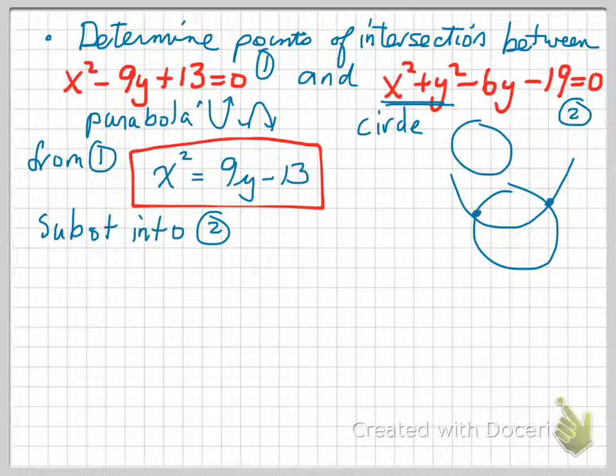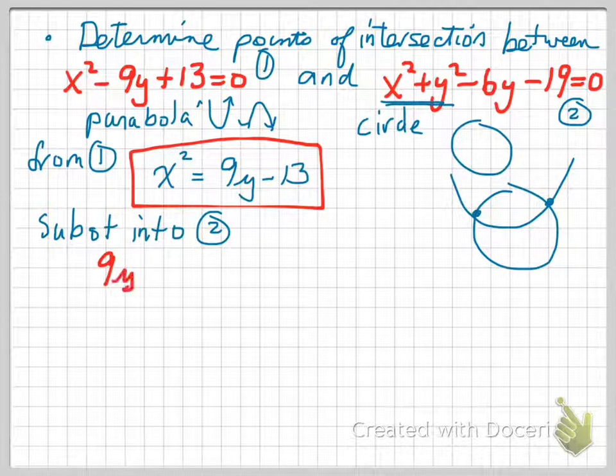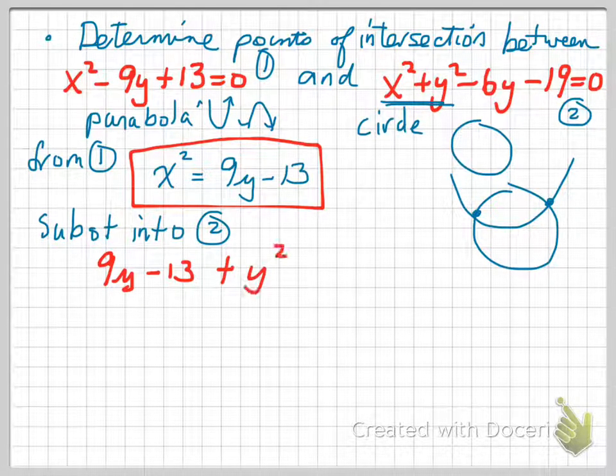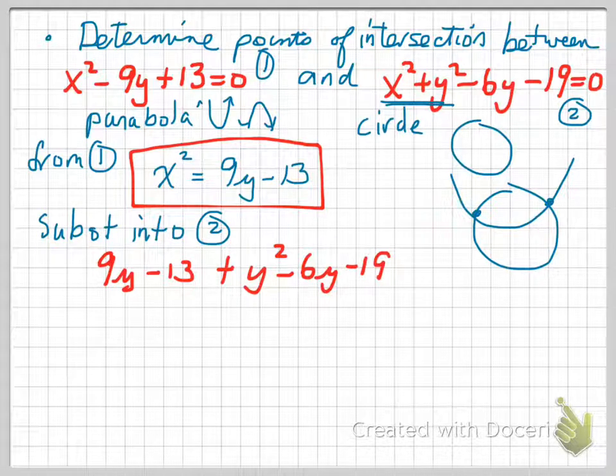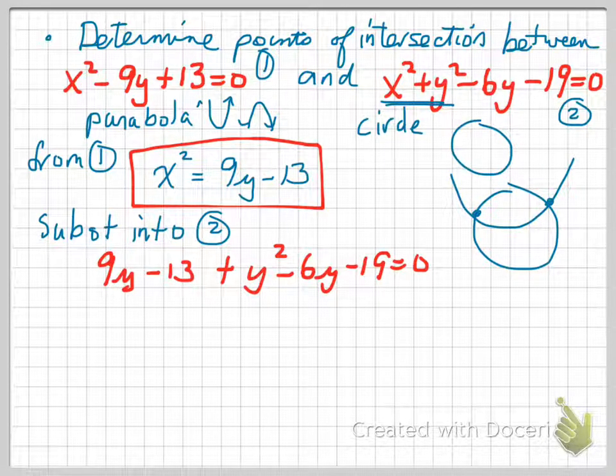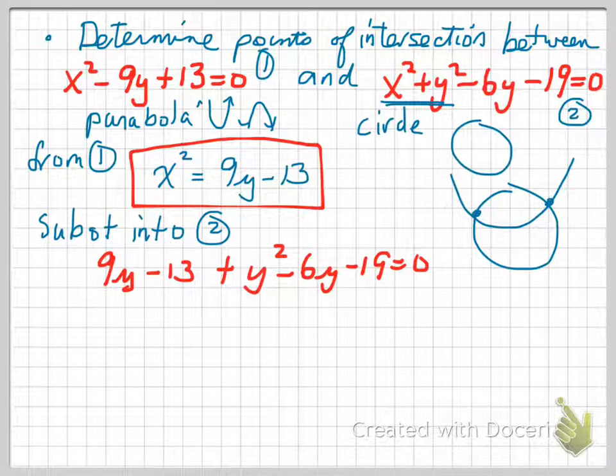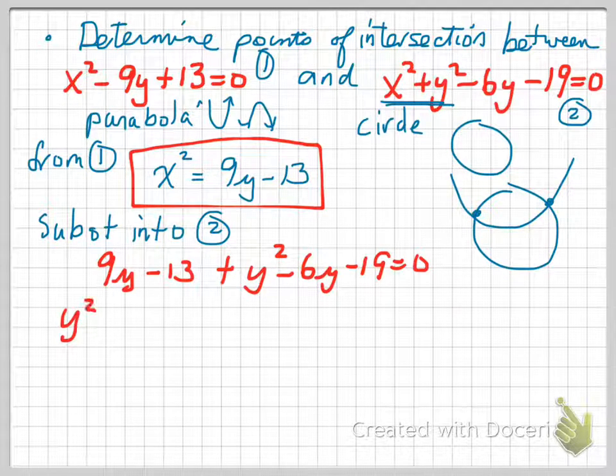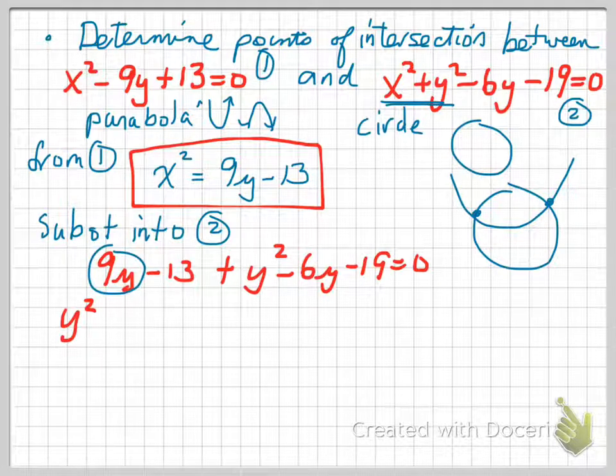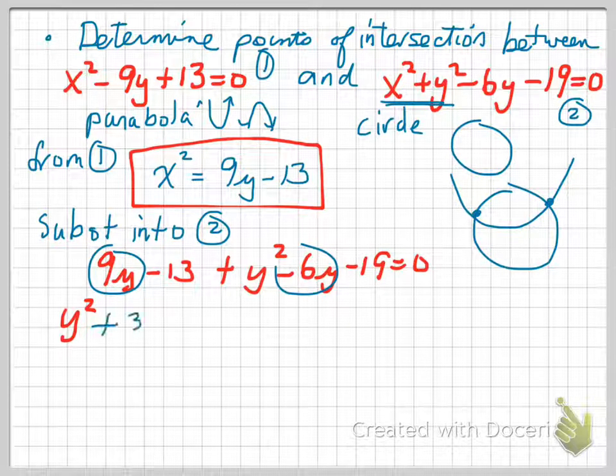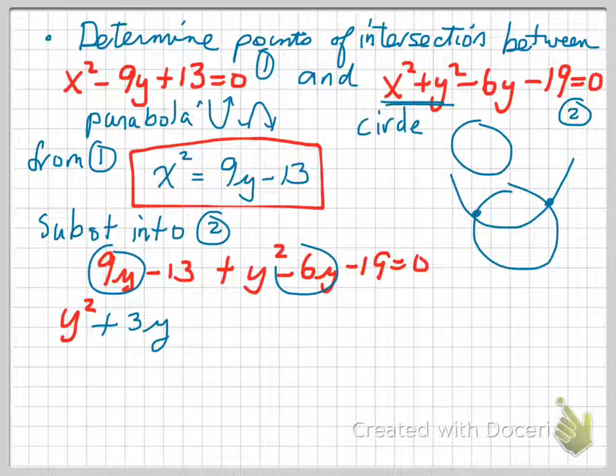So from equation 2 now, I'm going to rewrite it as 9y minus 13, because that's what x squared is, plus y squared minus 6y minus 19 is equal to 0. And this now gives me an equation with only one variable. So let's now tidy it up and collect like terms and organize it in a fashion that we can understand. So we're going to have y squared. And we have 9y and we have minus 6y. So it's going to be plus 3y. And we have minus 13 minus 19, which is minus 32, and that's equal to 0.